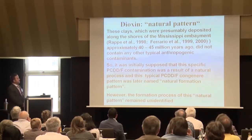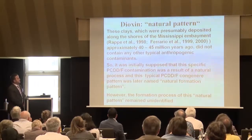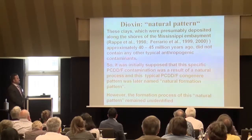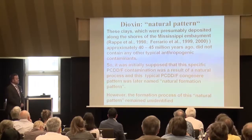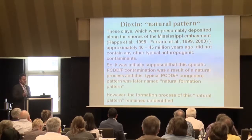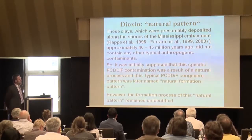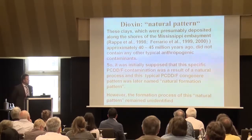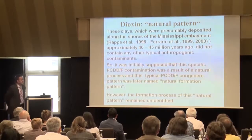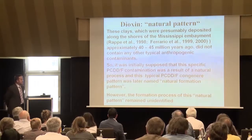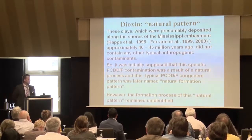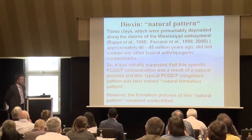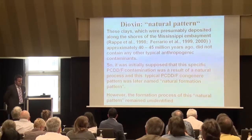Rappe and Ferrario did a lot of study on this. When it was found that these ball clay samples were at least 40 million years old and did not contain any other typical anthropogenic contaminants, a so-called natural process was first proposed as responsible for this formation. This specific pattern was later named the natural formation pattern; however, the formation process remained unidentified.